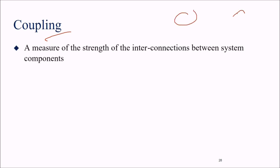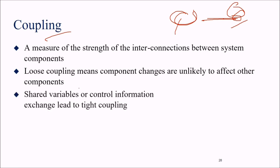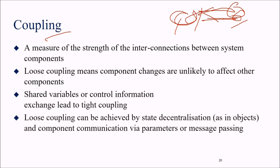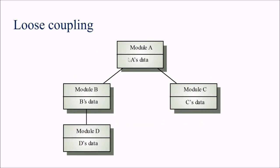Coupling is the measure of the strength of interconnection between system components. Loose coupling means component changes are unlikely to affect each other — they are independent. Shared variables or control information exchange leads to tight coupling, which we want to avoid. Loose coupling can be achieved by state decentralization as in objects, with components communicating via parameters or message passing only — not shared variables. Tight coupling involves a shared data area; loose coupling has Module A with its own data and Module B with its own data, communicating through message passing and parameters.